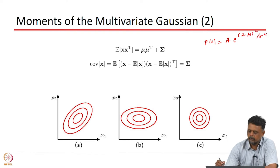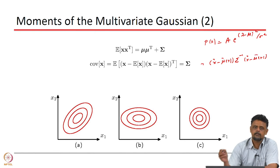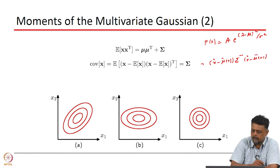For multivariate Gaussian, we had in the exponent the terms x minus mu, the inverse of the covariance matrix. Here x and mu are vectors depending on the number of dimensions that you are operating in.